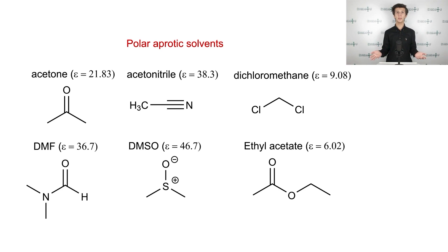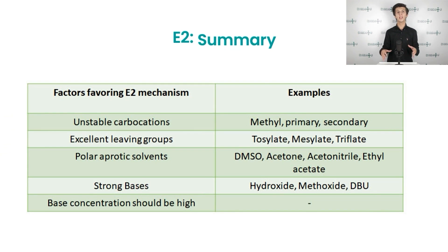But what does it mean for us? It means that the correct prediction of elimination mechanism for secondary and tertiary halides implies first analysis of base strength and secondly the influence of solvents on the base strength. And here again is a brief summary of factors favoring E2 mechanism. All in all, it is the unstable carbocations, good leaving groups, high base concentrations, strong bases and polar aprotic solvents which favor E2 mechanism.